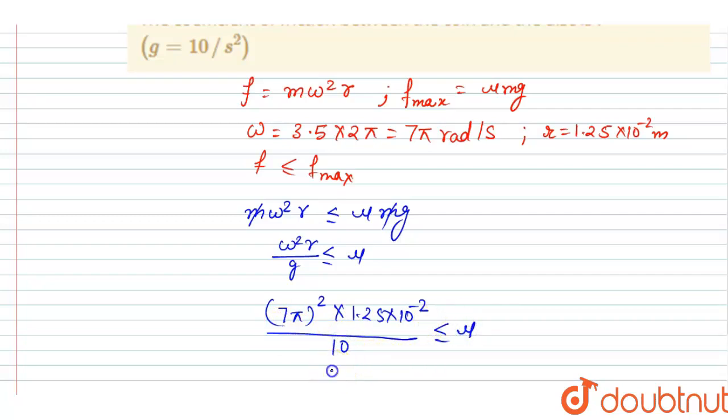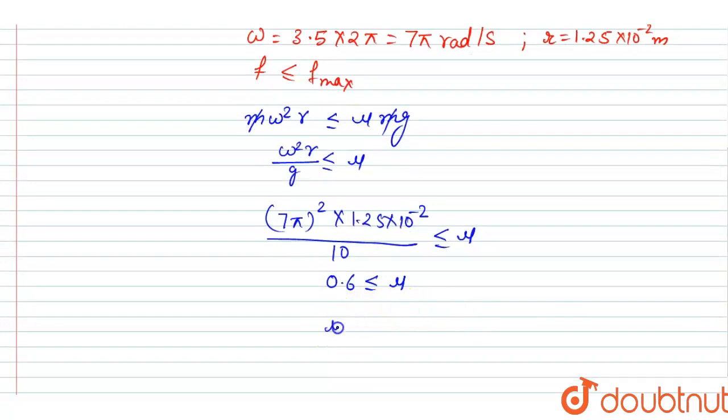From here you will get the value of mu is this much, and from here we can say the mu is 0.6, and this will be our answer. Simple.